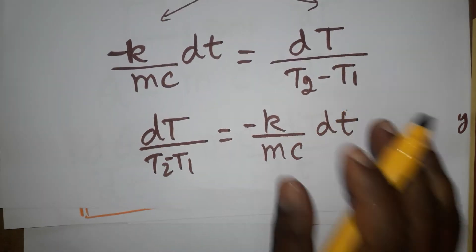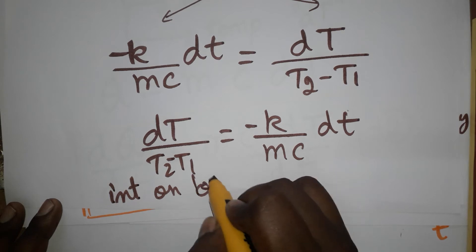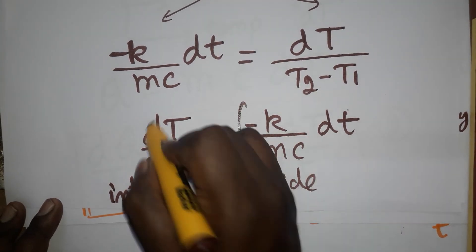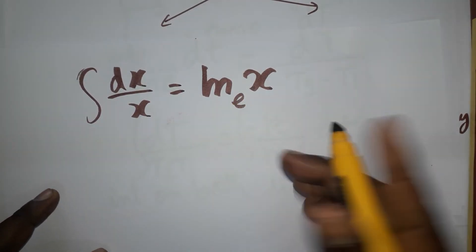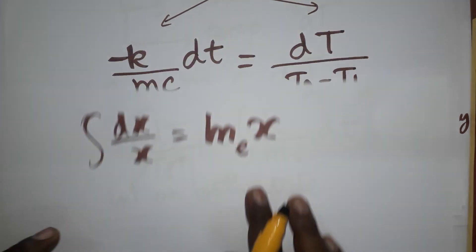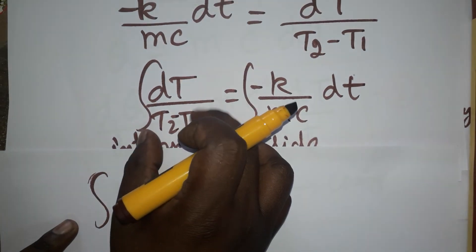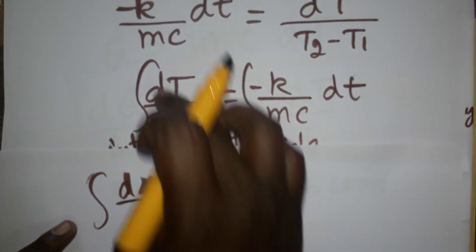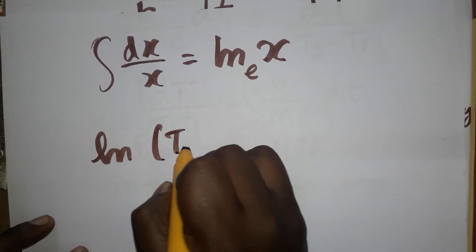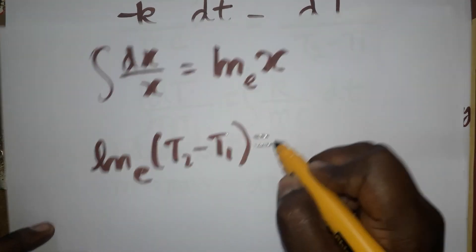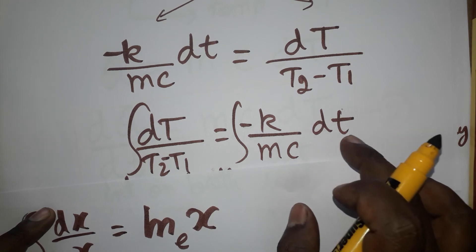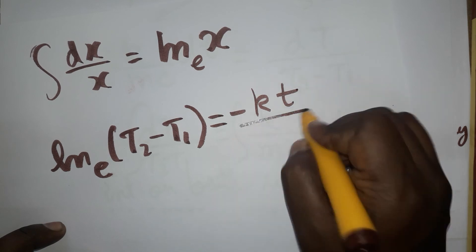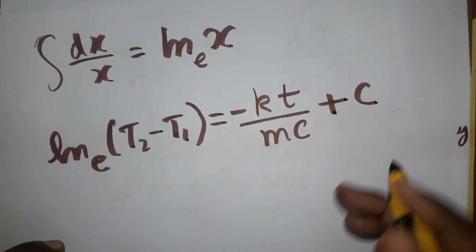Now integrate on both sides. The integration formula: the integral of dx/x equals ln(x), where ln uses base e, not log base 10. Applying this, the left side integrates to ln(T2 minus T1). On the right side, integrating dt gives small t, so we get: ln(T2 minus T1) equals minus k·t divided by m·c, plus integration constant C.